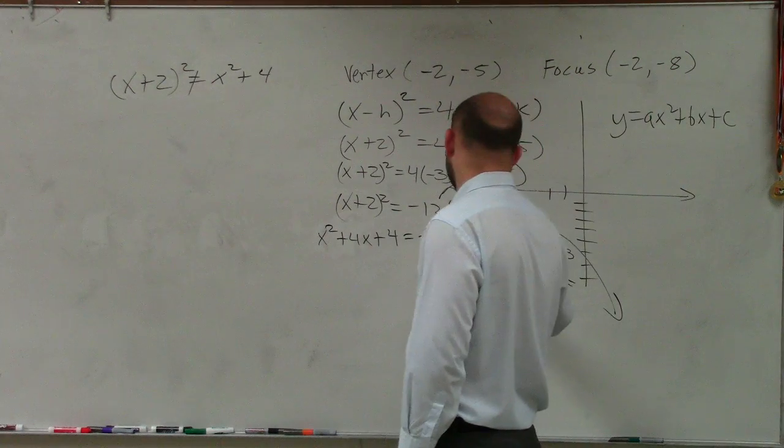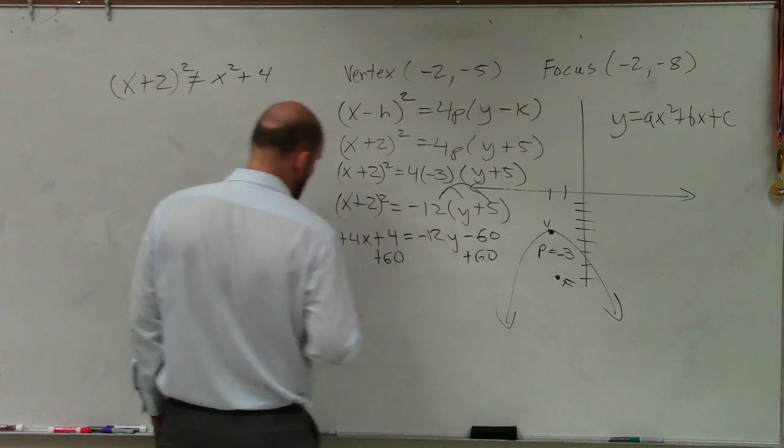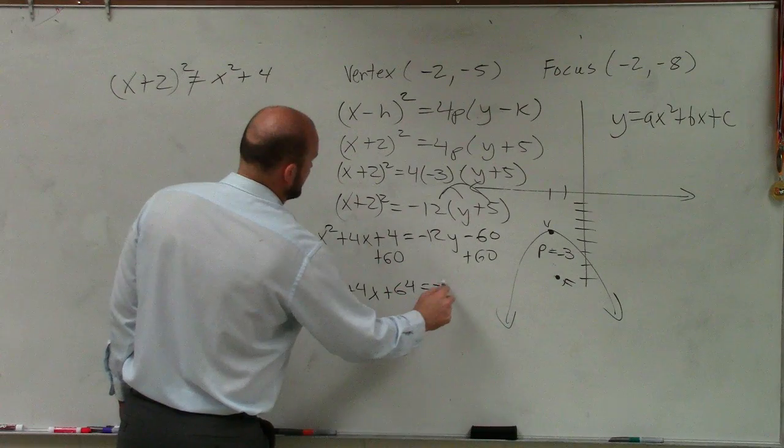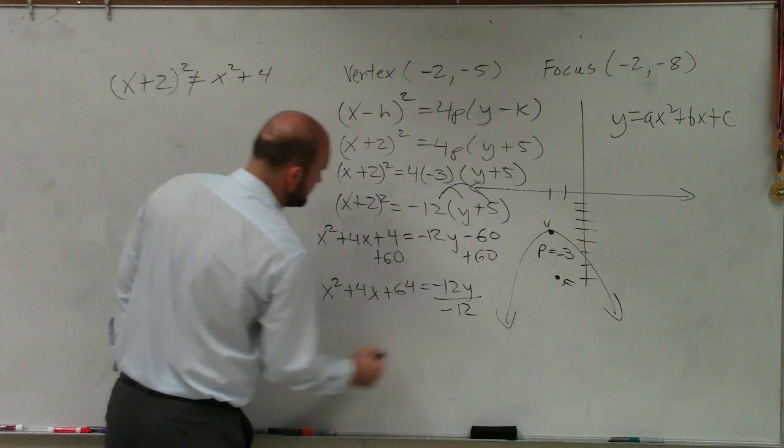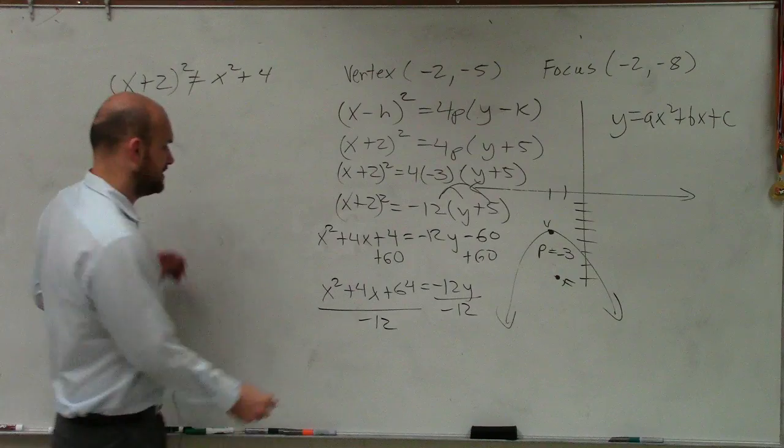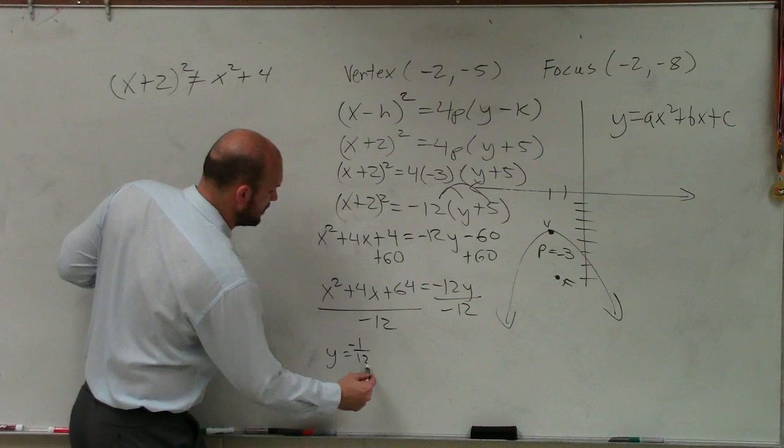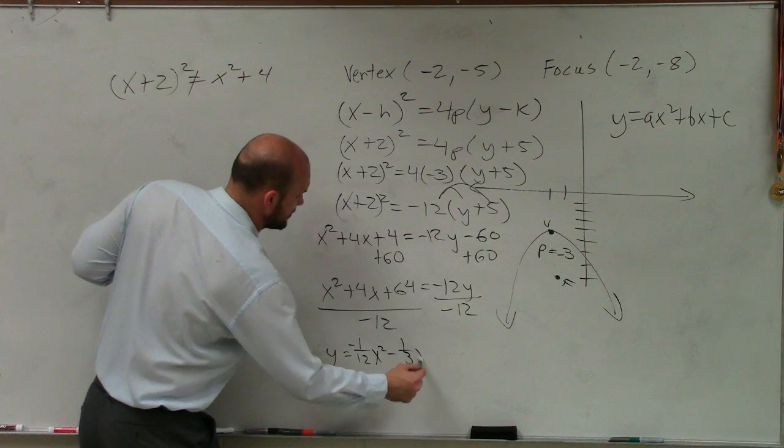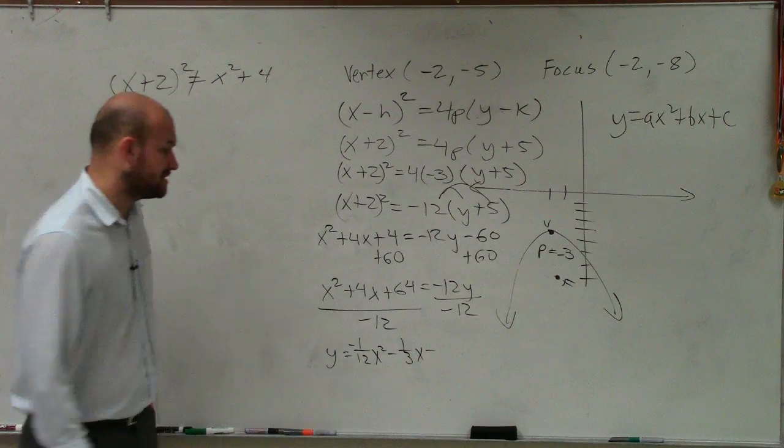Now, to finish this up, what I'll do is I'll add 60 to the other side. So I have x squared plus 4x plus 64 equals negative 12y. Solve for y. I'll divide by negative 12, and therefore, I have y equals negative 1/12 x squared minus 1/3 x minus 16 thirds.